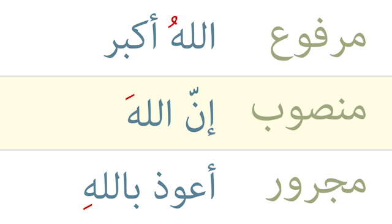Looking at the mansub state, we see 'inna allaha,' because the word Allah comes after the word inna. According to the rules of Arabic, the word inna makes the word after it — Allah in this case — be in a state of mansub, represented by the fathah, which makes the 'a' sound, so we say 'inna allaha.' In the majroor state, we see 'a'udhu billahi,' because Allah comes after the harf b. This harf makes the word coming after it be in the state of majroor, represented by the kasra, which makes the 'ee' sound, so we say 'a'udhu billahi.'